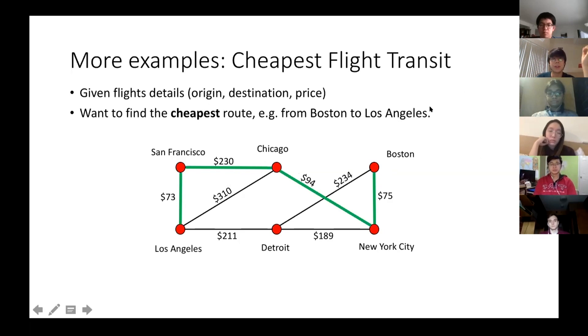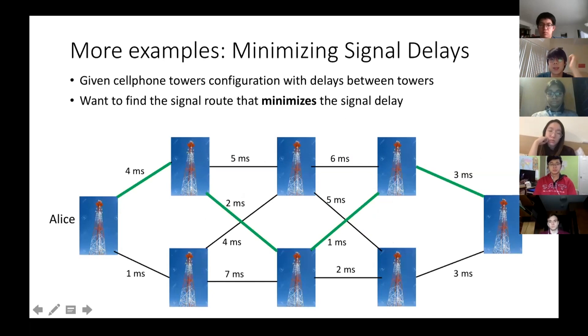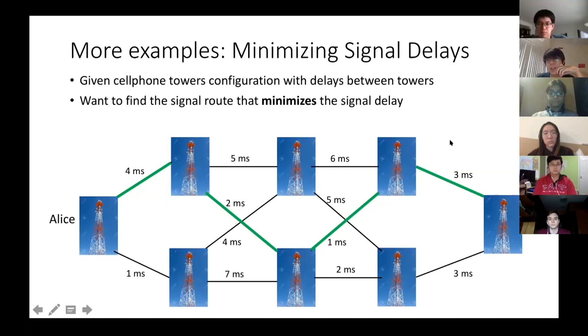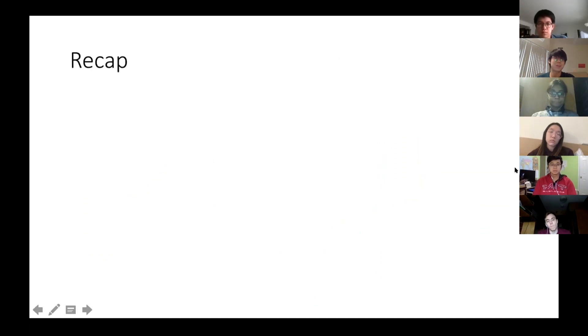Another example that I have here is minimizing the signal delay. If you want to call a friend, like Alice wants to call Bob, the signal is actually going to bounce off a lot of cell phone towers until reaching the destination. From the signal to go from one tower to another tower, it has some delays. We can model this as a graph with the nodes to be the cell phone towers and the edges to represent the delays from tower to tower. We can use the breadth first search to see what should be the route that the signal actually minimizes the delay.